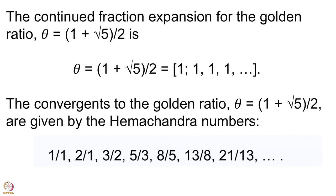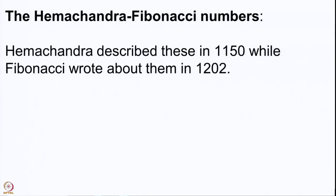If you look at this sequence of numerators — 1, 2, 3, 5, 8, 13, 21, 34, and so on — these are what are commonly known as the Fibonacci numbers. But as we saw in the last lecture, these were described by Hemachandra in 1150, more than 50 years before Fibonacci wrote about them.